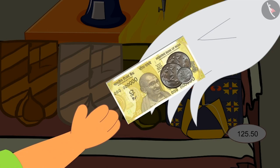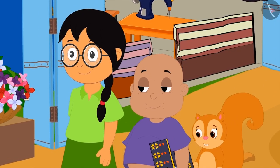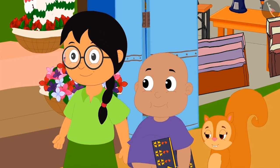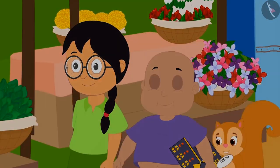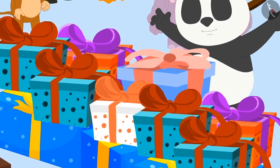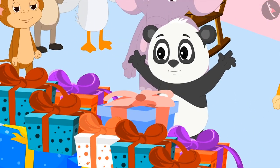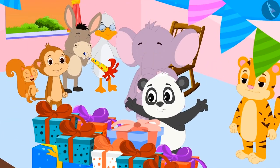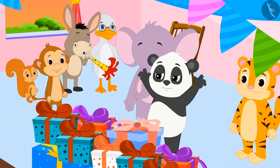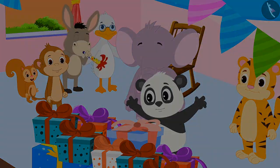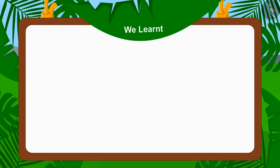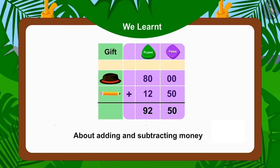The Uncle returned Rs. 24.50 paise. The next day, when Golu saw his gifts on his birthday, he started dancing happily. All friends celebrated Golu's birthday in a grand manner. In this video, we learned to add and subtract money. In the next video, we will learn more about it with some interesting examples.